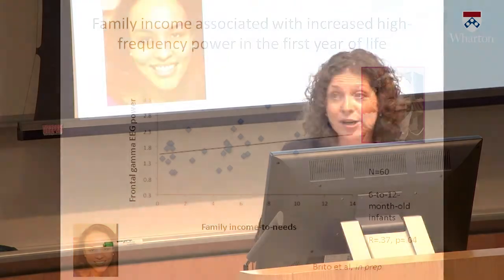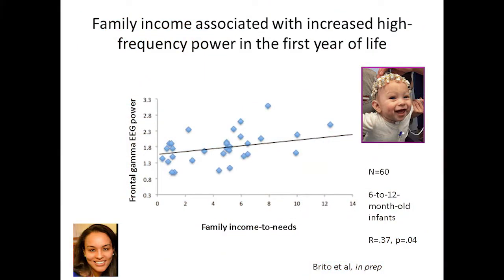Ongoing work in my lab looking at children in the second half of the first year of life tells a different story. In infants between 6 and 12 months of age, by the second half of the first year we are seeing socioeconomic disparities in resting brain function. Children from higher family income — or income-to-needs, which is income adjusted for family size — do show evidence of greater high-frequency power.